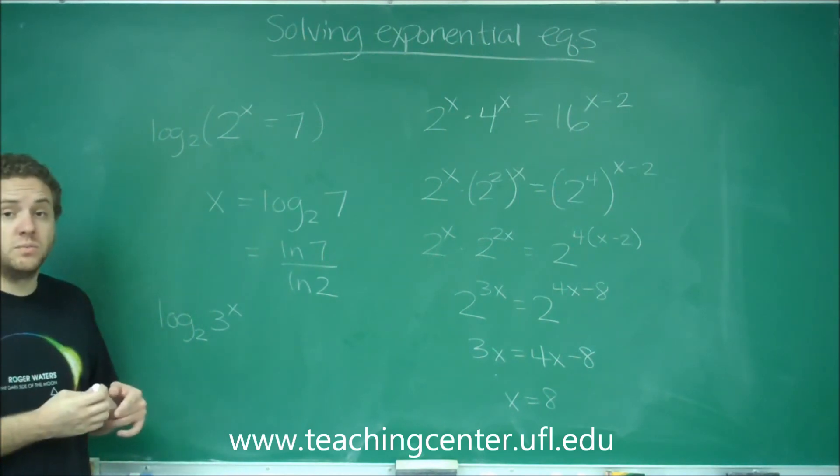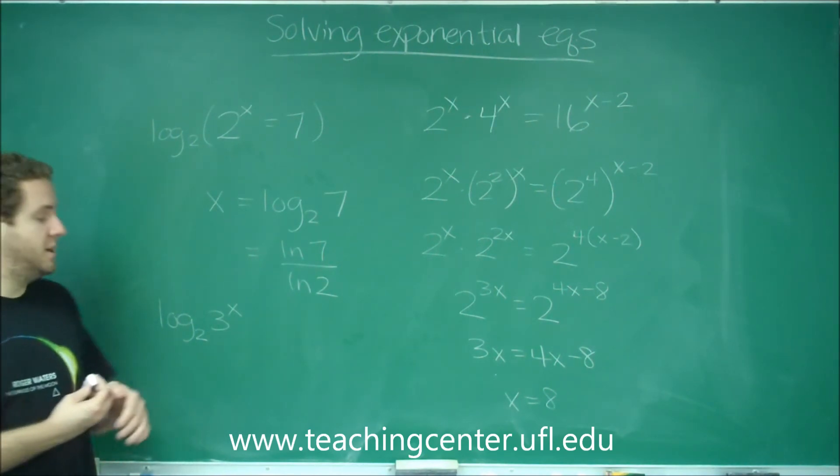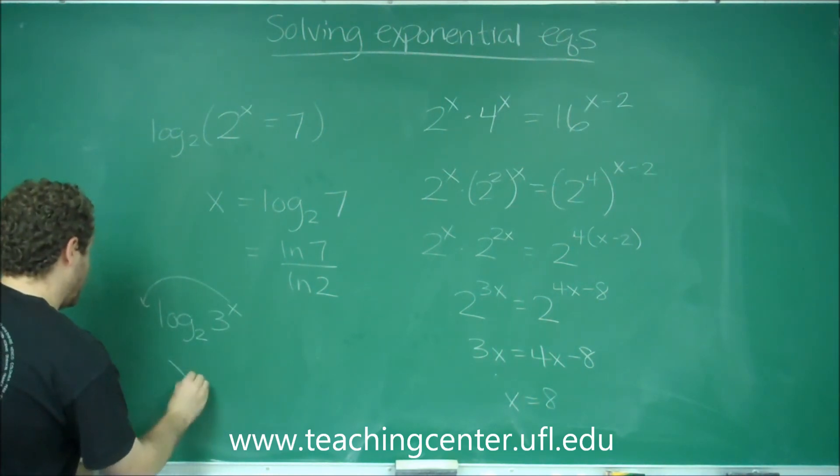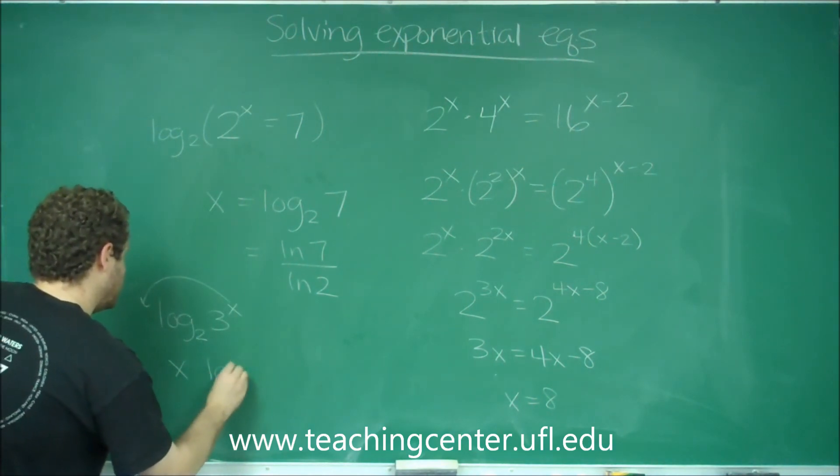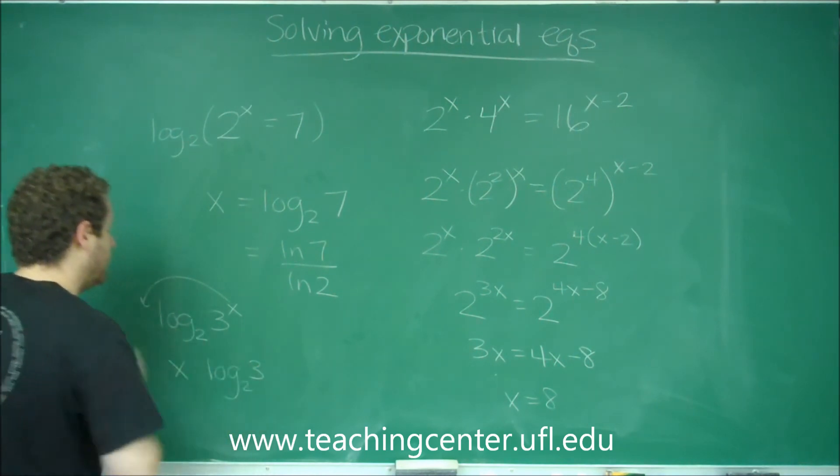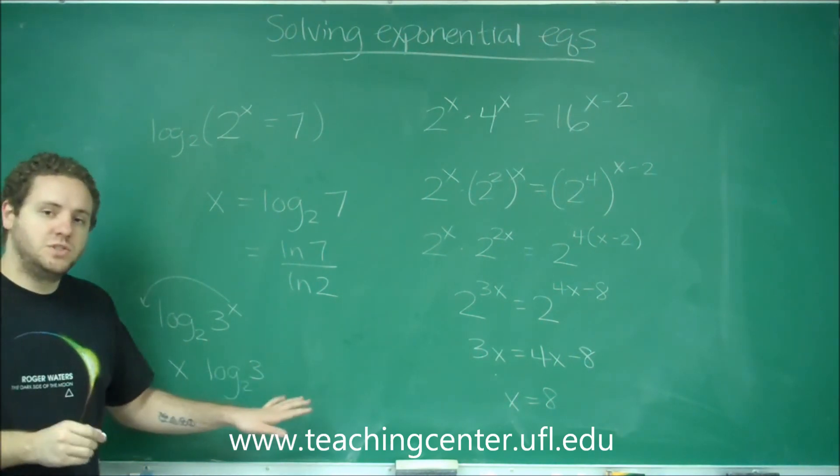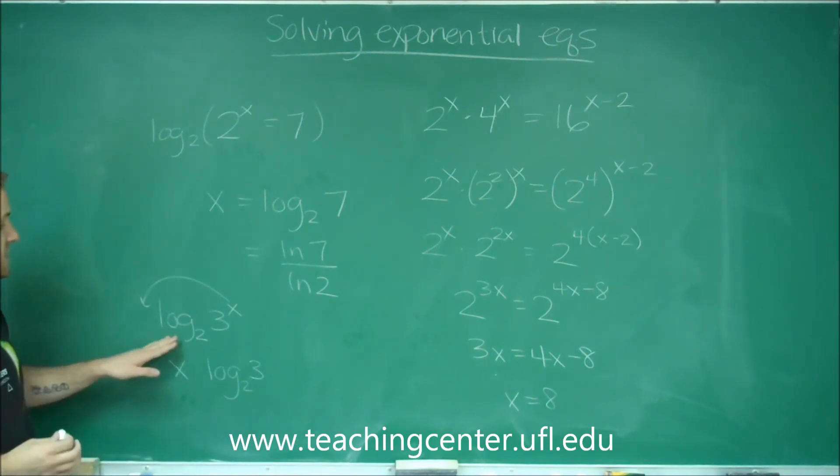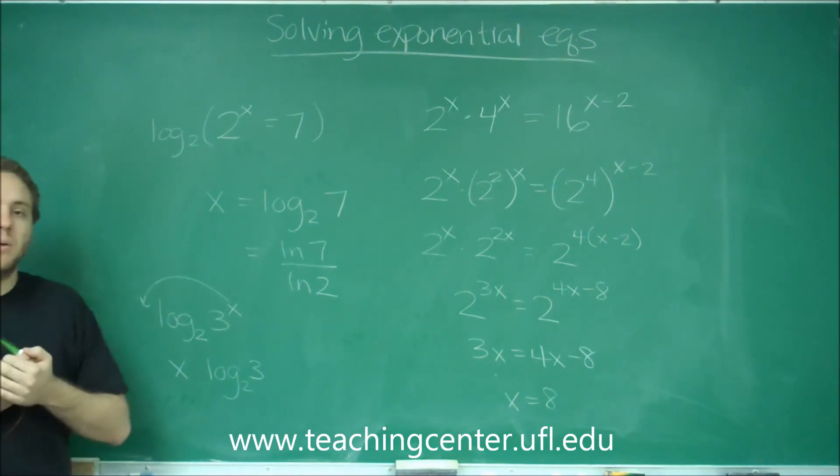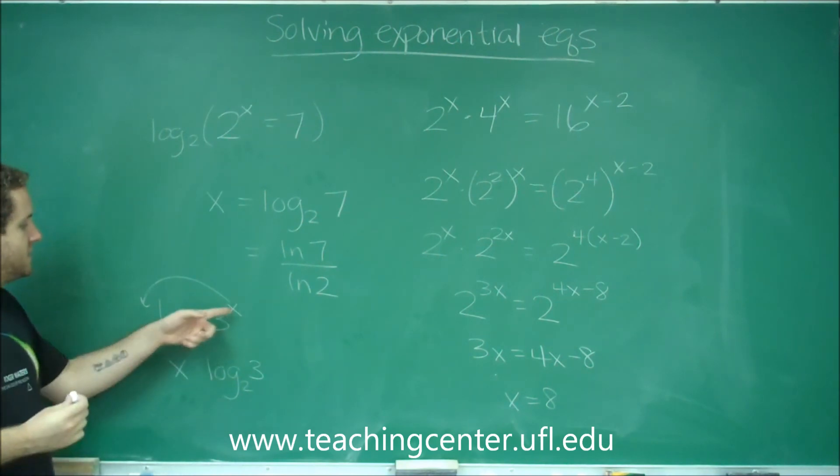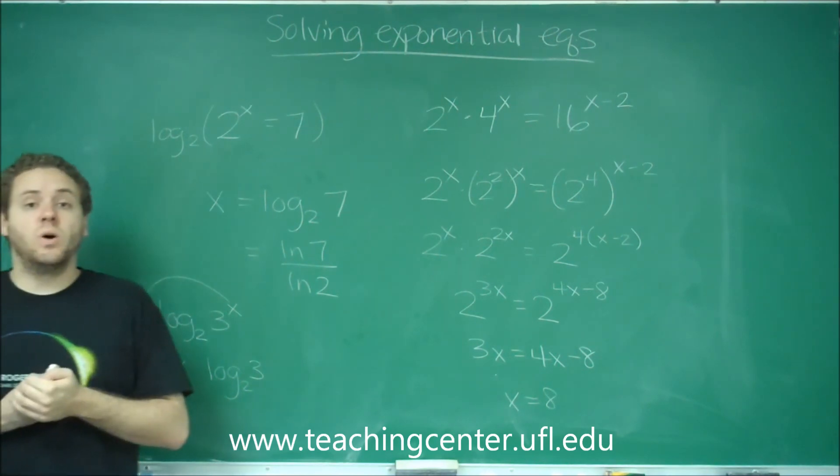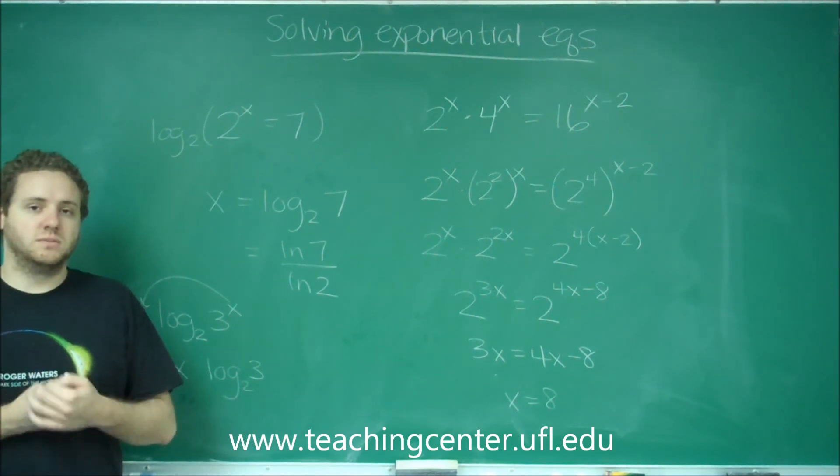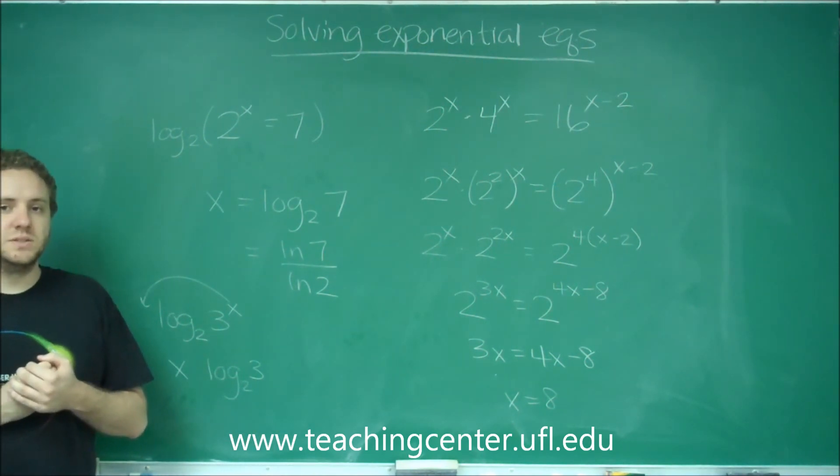However, remember that by your logarithm rules, which we have all of those in another video, the power can still come to the front to get x times log base 2 of 3. And now you can do division or whatever you would need to do to solve for x. So even if it's not the exact base that cancels it out perfectly, it still brings the x down to the front, which is what we want, because now you can solve for it by using your regular algebra terms. So that's the tips for solving exponential equations.